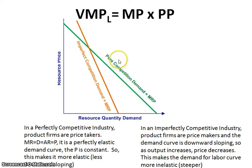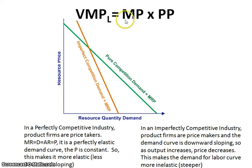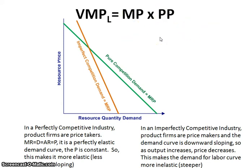For the imperfectly competitive firm, they're price makers. If they want to increase quantity, they have to lower the price because of the law of demand — as output increases, price goes down. So looking at the formula, not only is marginal product going down as more workers are hired, but so is the product price as they move to a larger quantity of the product. With two things making it decline, the curve becomes much steeper — or more inelastic.